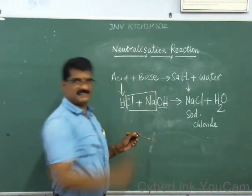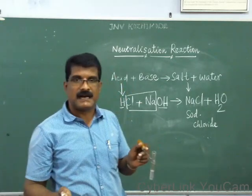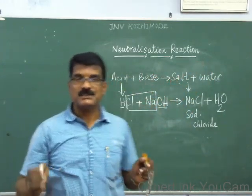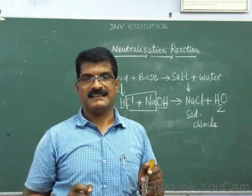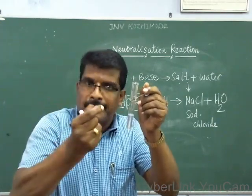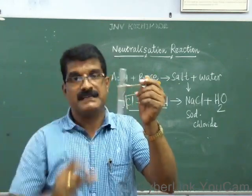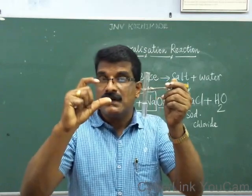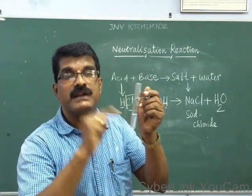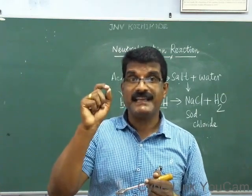A neutralization reaction is one in which an acid and a base react, one cancels the property of the other and vice versa, and that leads to the formation of a salt and water. When I added just one drop, that point is called the neutralization point — now it is neutral. A salt is neutral because the concentration of base and the concentration of acid are almost the same, so we got a neutral salt — sodium chloride and water.